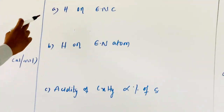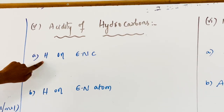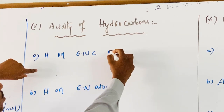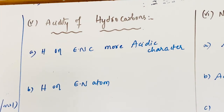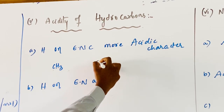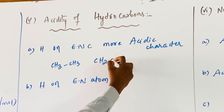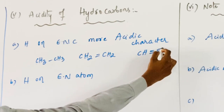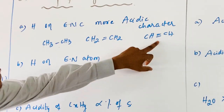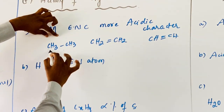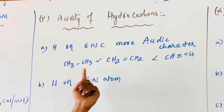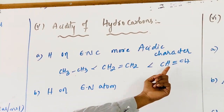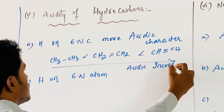Now coming to the next topic, that is acidity of hydrocarbons. The hydrocarbon that can have more acidic character: comparing CH3-CH3 (ethane), CH2=CH2 (ethylene), and CH≡CH (ethyne). The acidity character increases from ethane less than ethylene less than ethyne.